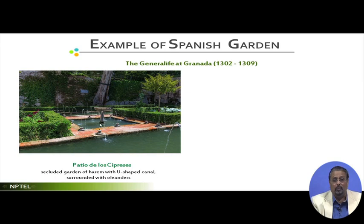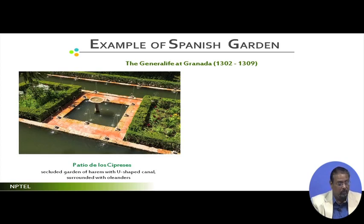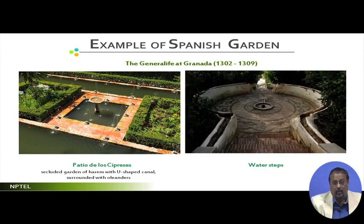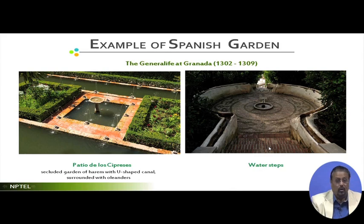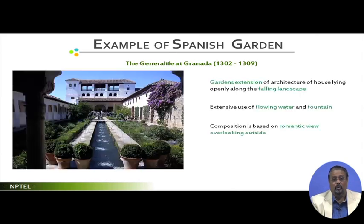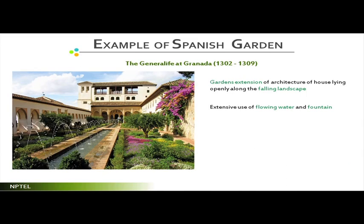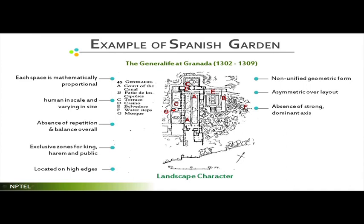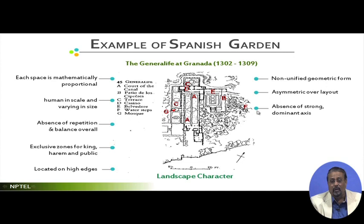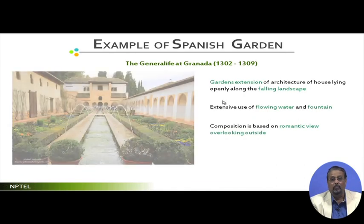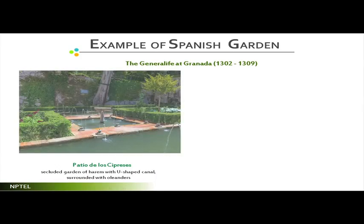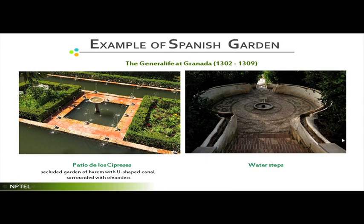There are small spouts in fountains surrounded by hedges - different views of the same thing from different directions. Another feature they have added is called the water steps. If you recall, referring back to that particular sketch plan for reference: the letter F is the water step - it starts from here and goes down, so this is uphill and this is downhill.